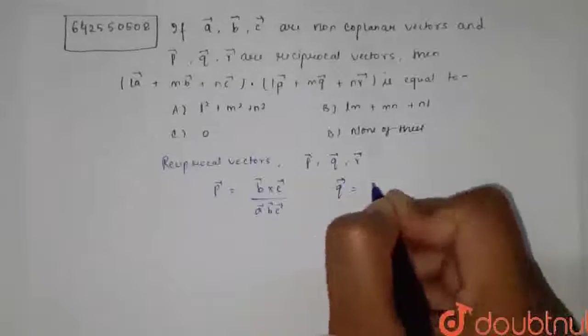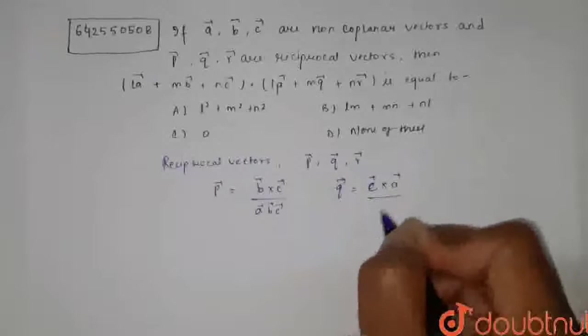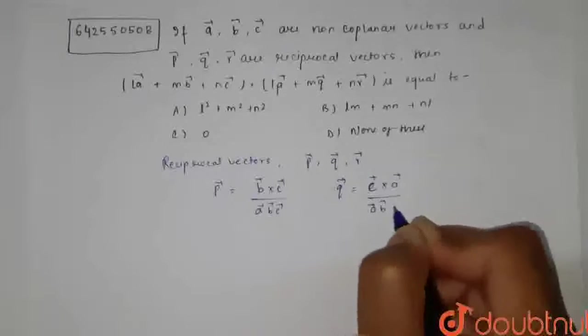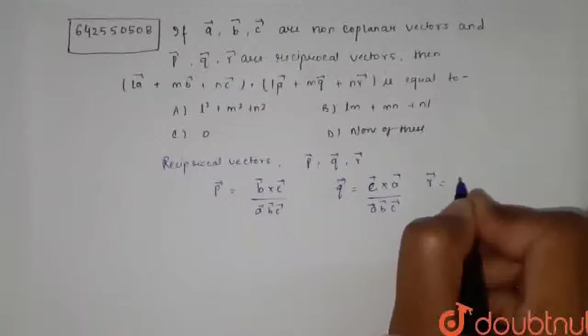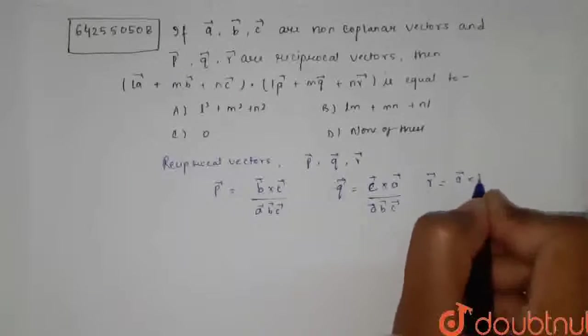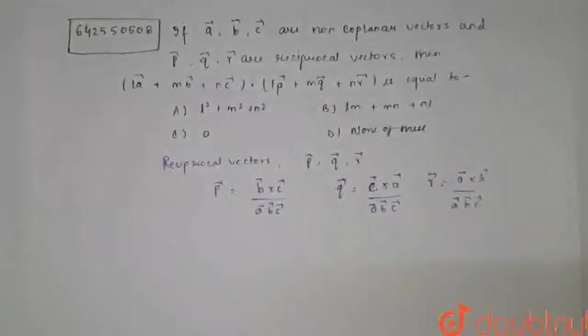And R vector can be written as A cross B upon A, B and C.